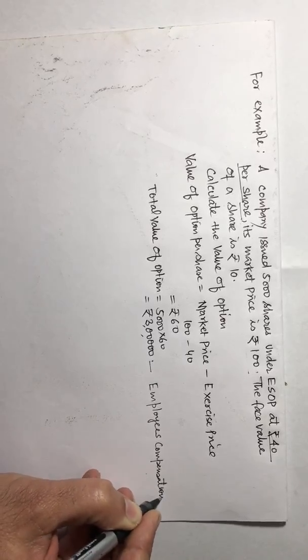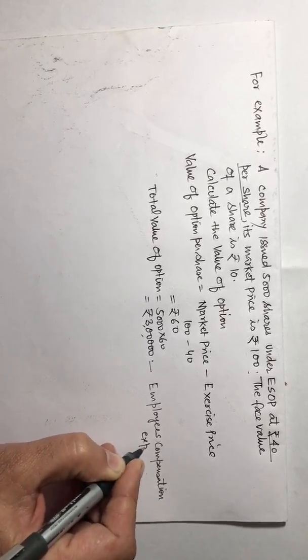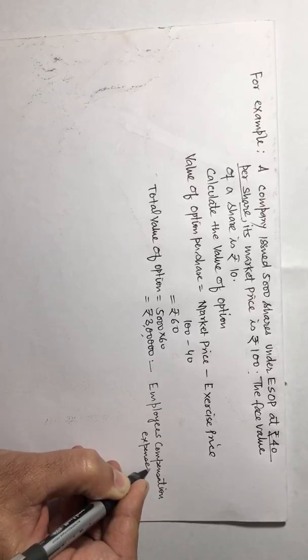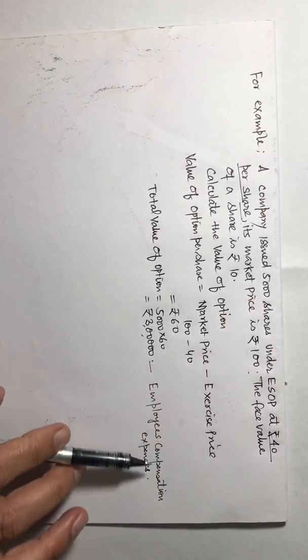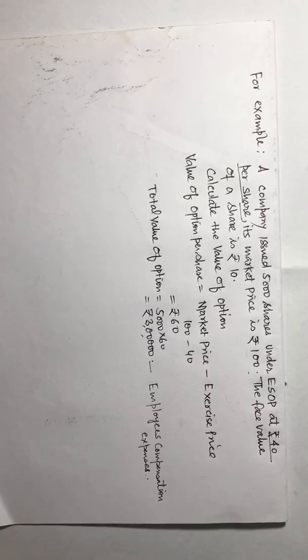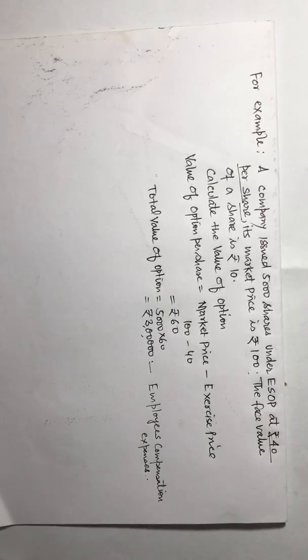The value of option is basically employee compensation expense. So this is the account which we have to debit in the journal entry. But we don't have to focus much on the numerical aspect because the board is not giving more than a question of one mark or two mark or three mark, but it will be all theory-based questions. So these are the important points you have to remember. Thank you.